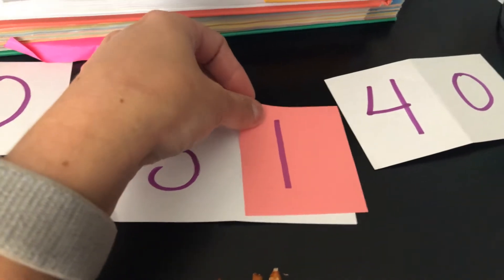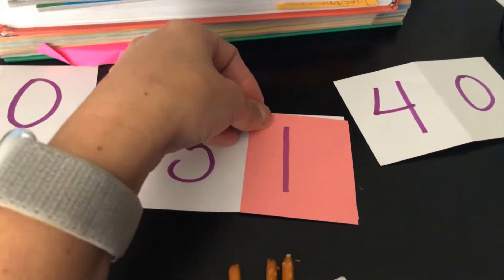So, here is the number 30, but if I take my 1 for my ones and cover up the 0, just like we do with our secret code cards, I have the number 31.